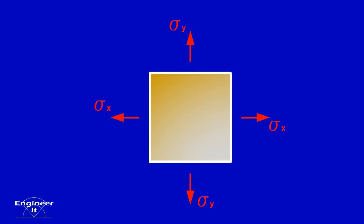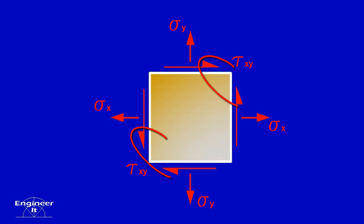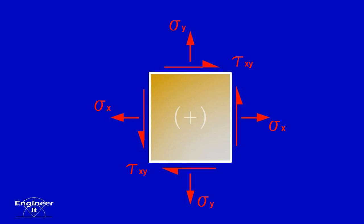The normal stresses are drawn in the positive sign convention. Positive normal stress is usually thought of as tension. This is the positive sign convention for shear stress on the x-y plane. Notice the arrows are either head-to-head or tail-to-tail, never head-to-tail. Shown here is the complete positive sign convention for a differential element.